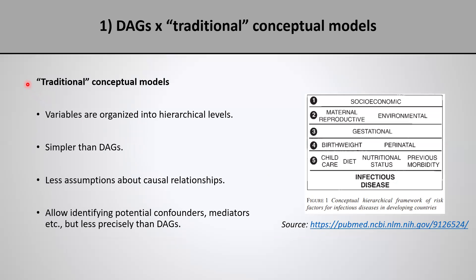This video is supposed to be a gentle introduction to DAGs, and I wanted to do that by comparing them to more traditional conceptual models, because those have been around in epidemiology for decades. In those models, we organize the variables into hierarchical levels. We have our outcome — in this example, infectious disease — and we organize its causes into levels: the more proximal level and the more distal level, and all the levels in between. Because we don't need to be explicit about the causal relationships between every pair of variables, traditional conceptual models are simpler to draw than DAGs. And even though they are simpler and require fewer assumptions, they are still useful because they allow identifying potential confounders or mediators.